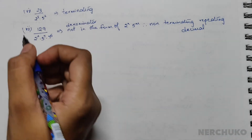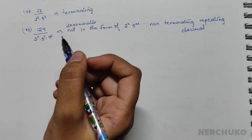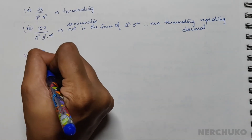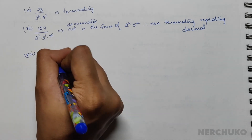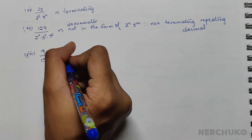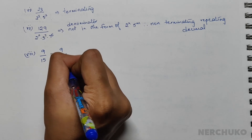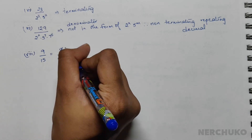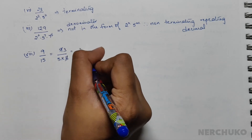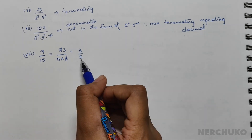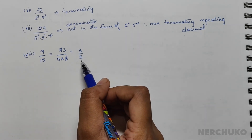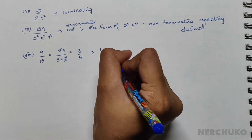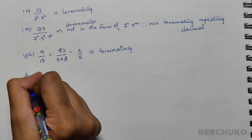For the eighth bit, we have 9 divided by 15, which is equal to 9 divided by 5 × 3. We can cancel the 3 and 9 and write this as 3 divided by 5. Since the denominator has only the prime factor 5, it is a terminating decimal.